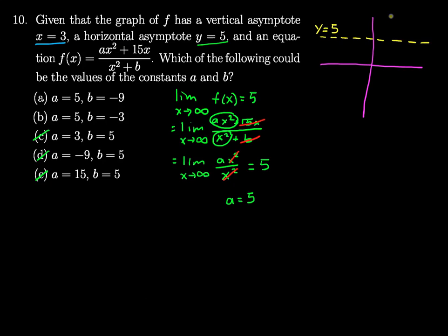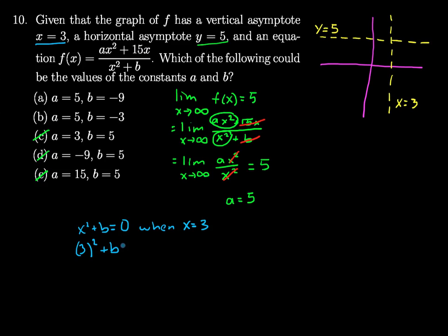A vertical asymptote of x equals 3 means this vertical line at x equals 3. As we get close to 3 from the right or the left, we need to go off to either positive or negative infinity. There's only one way we can accomplish this with a rational expression like this — we need to get the denominator equal to 0. So we take the denominator, x squared plus b, and we need this to equal 0 when x equals 3, so we can get our limit going off to infinity and produce our vertical asymptote. We can solve this by substituting 3 in for x and solving for b.